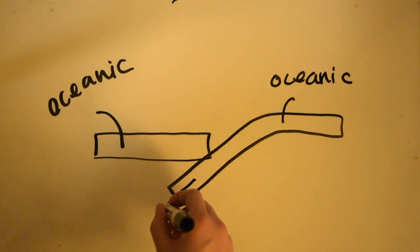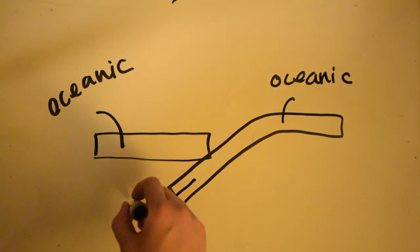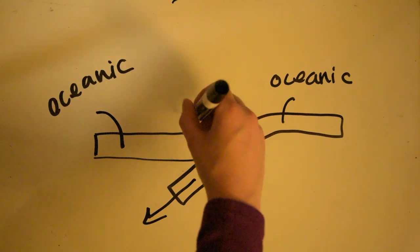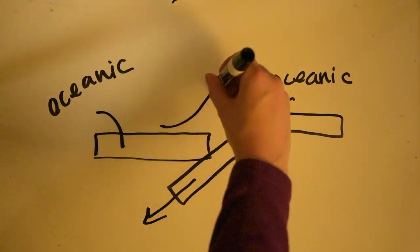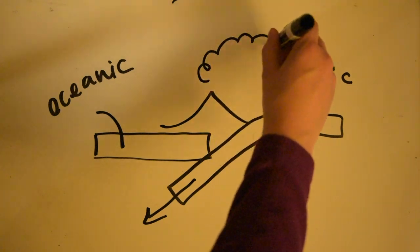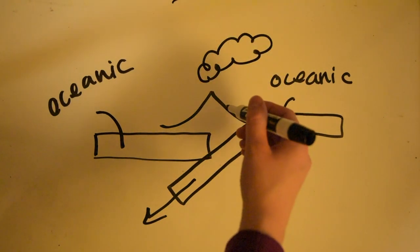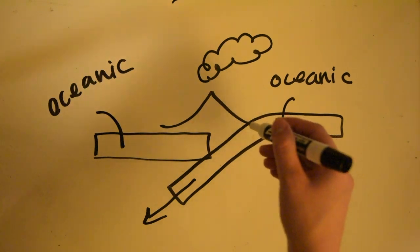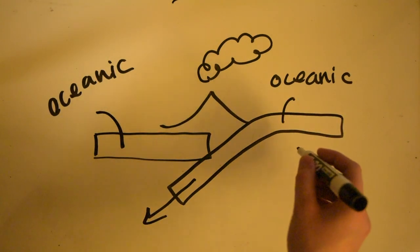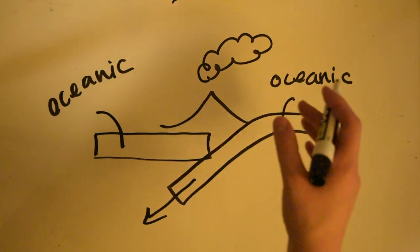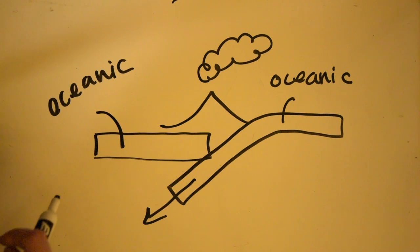And what this does is it goes deep into the earth and gets recycled. This right here will form what is known as an island arc, and usually there's volcanoes here. An example of this is the Aleutian Islands off the coast of Alaska. That little tail off the coast of Alaska is caused by the oceanic-oceanic plates converging and causing these island arcs.